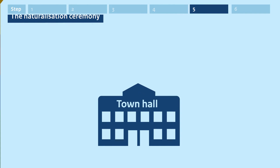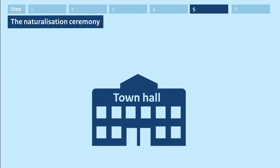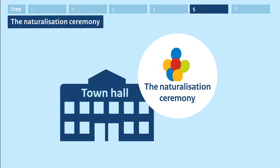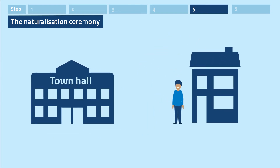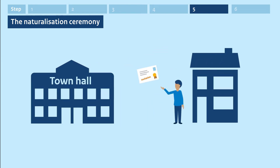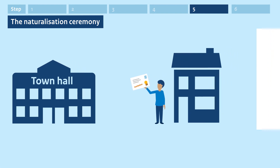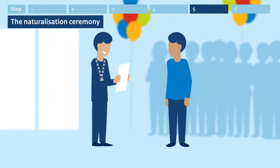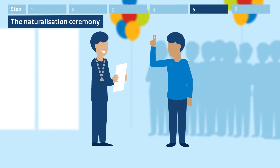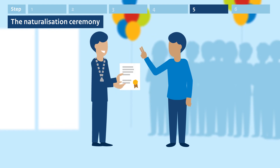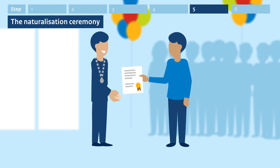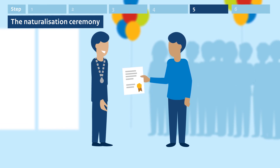Step 5. The naturalization ceremony. You only become Dutch if you attend the naturalization ceremony. If your application has been approved, you'll receive an invitation from the town hall. During the naturalization ceremony, you must take the Declaration of Solidarity. You declare that the laws of the Kingdom of the Netherlands apply to you. At the ceremony, you receive the naturalization decision. Then you can apply for a Dutch passport.